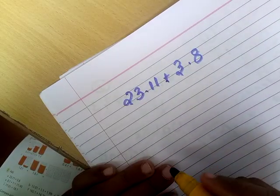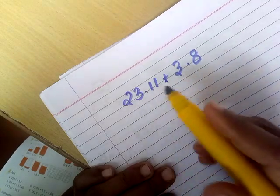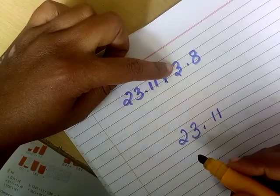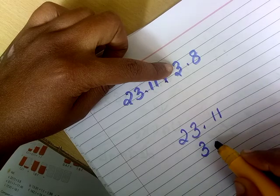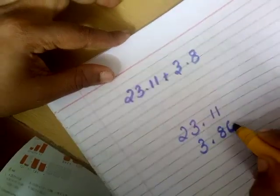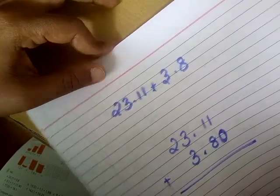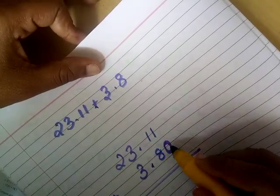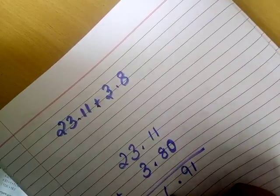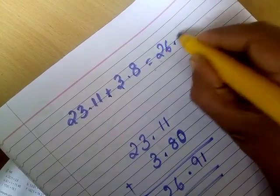Now look at this question: 23.11 plus 3.8. They are unlike decimals, so first place 23.11. When you place 3.8, be careful — 3 should be in the ones place, and 8 is in the tenths place, with 0 in the hundredths place, making it 3.80. Placing the digits according to place value is very important. Now add: 1 plus 0 is 1, 1 plus 8 is 9, put the decimal point, then 3 plus 3 is 6, and bring down 2. So the answer is 26.91.